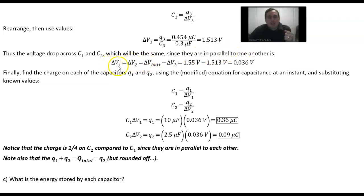Then we can say delta v_1 and delta v_2 should be the same voltage drop across each capacitor, should be the voltage drop of the battery minus the voltage drop of capacitor 3, which is upstream of capacitor 1 or 2. So if we subtract those voltages, we get 0.036 volts.